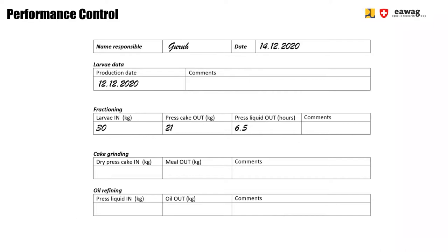Returning to the log sheet: you will have already recorded how much press cake and pressed liquid was yielded from the fractioning process. Now complete the log sheet by filling in the mass of meal and mass of oil obtained from the refining process.